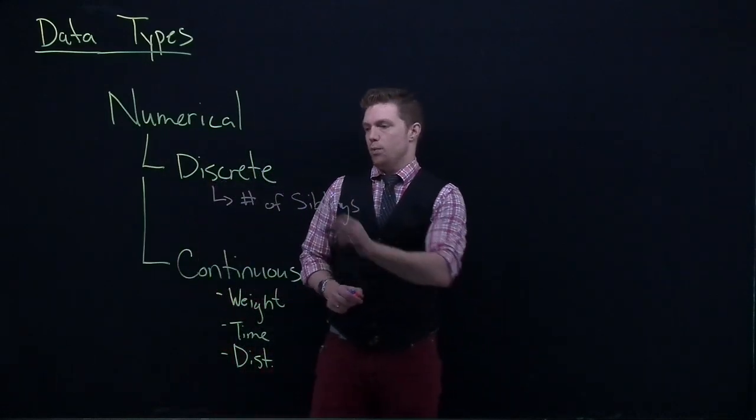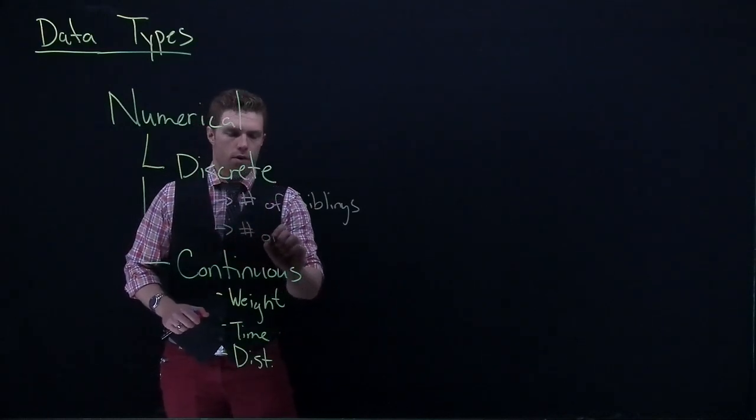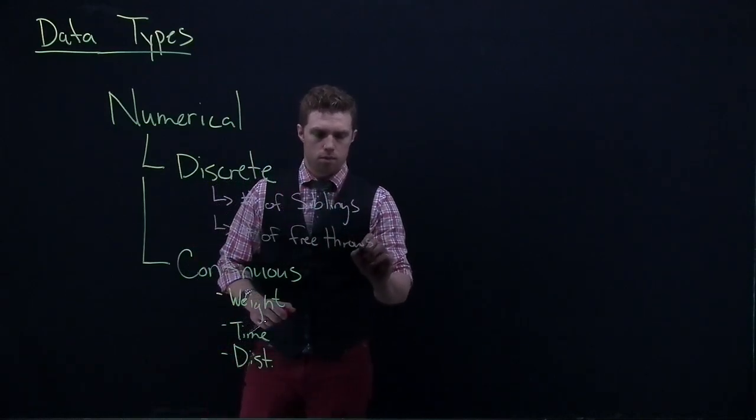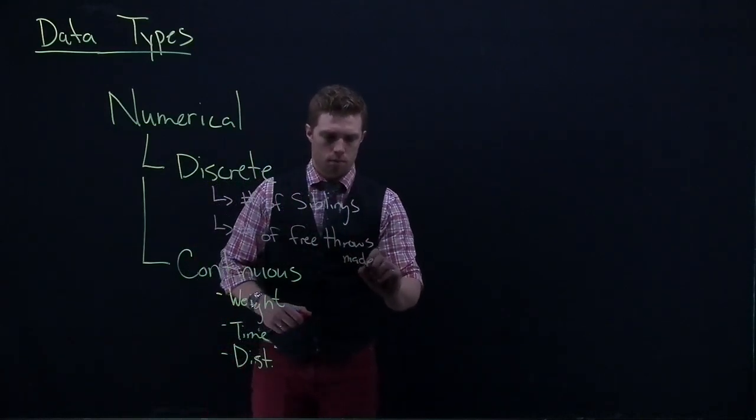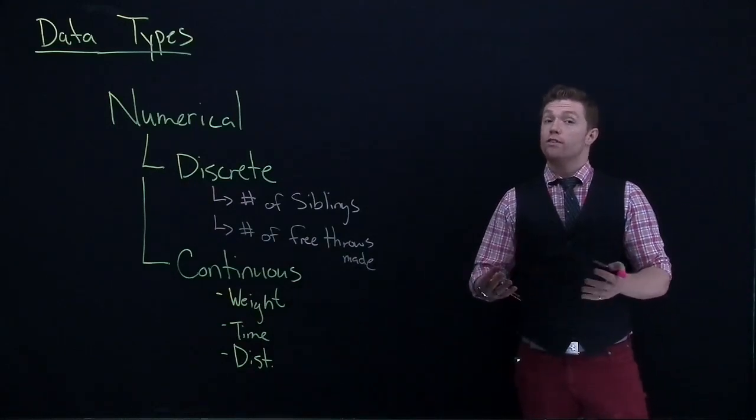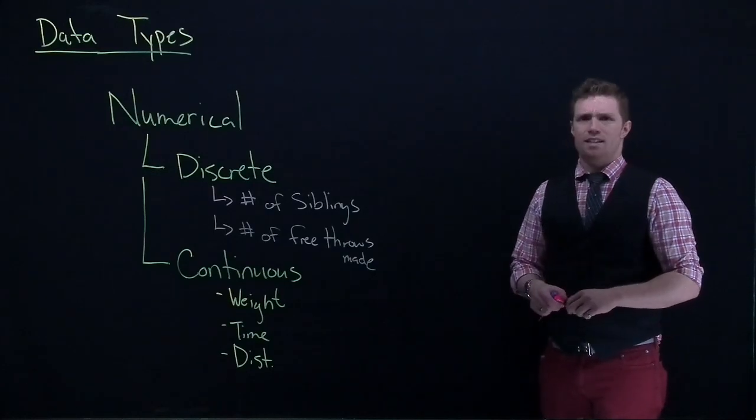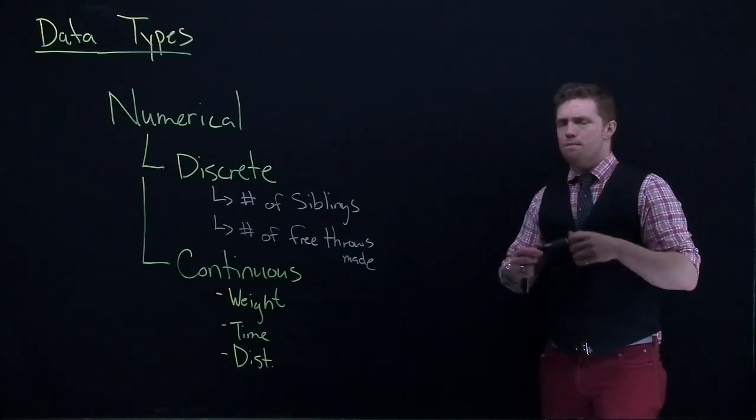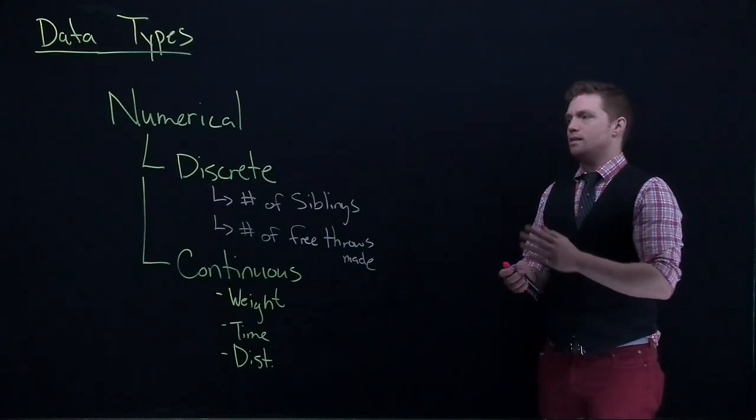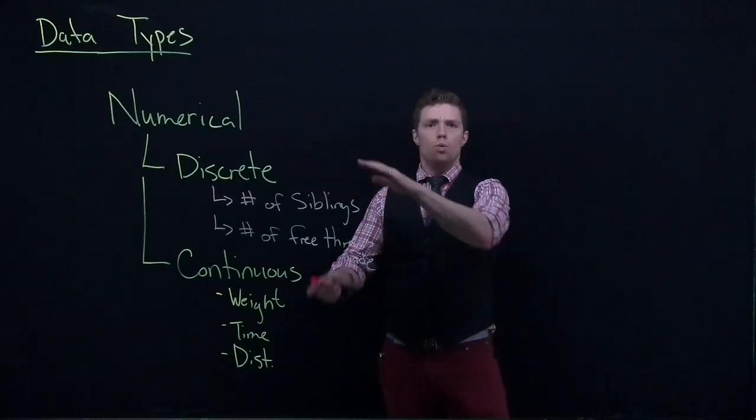We could also talk about like number of free throws made. In each of those ones, we could respond that I made four free throws, I could say that I made five free throws, but saying that somebody in the NBA made 3.4 free throws during the last game doesn't make sense, and that's because it is a discrete piece of data.